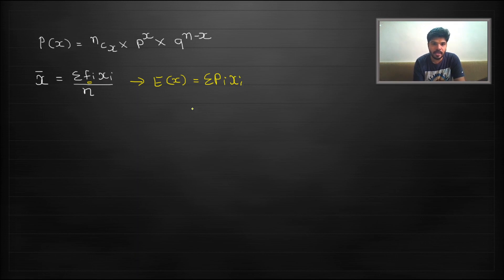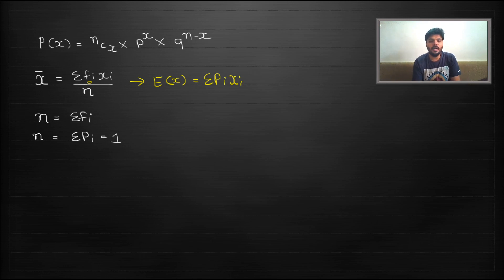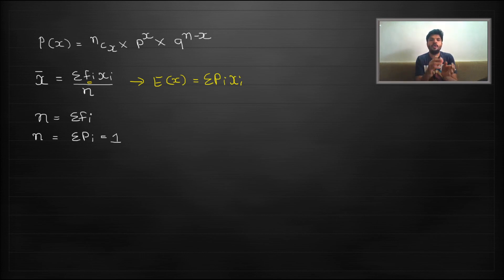The xi remains the same as the variable under study. The reason we drop n from the denominator is that n equals sigma fi in classified data, so here n should equal sigma pi — and sigma pi equals 1. That is why we do not put n in the denominator. So the simple formula of the mean is being transformed into the formula of mathematical expectation, or expected value.